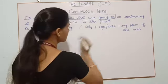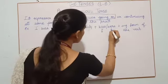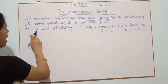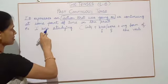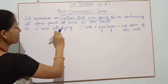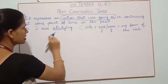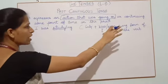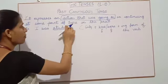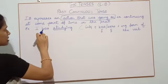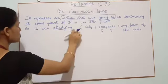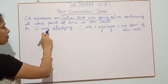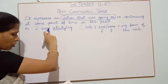The formula for past continuous tense is: Subject + was/were + verb(-ing). For example, 'I was studying.' Here, 'I' is the subject, 'was' is the auxiliary, and 'studying' uses the base form 'study' plus -ing. This is a positive, or affirmative, example of past continuous tense.